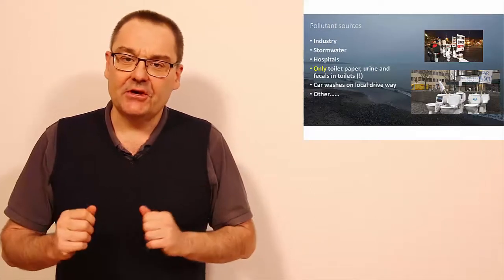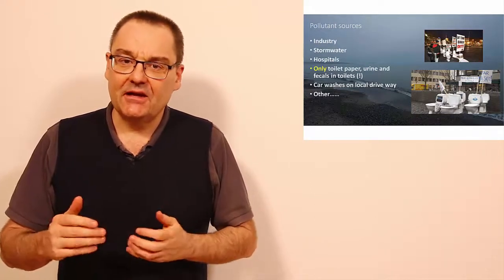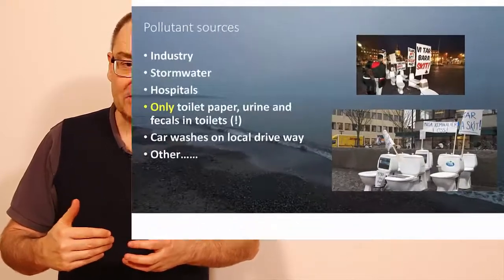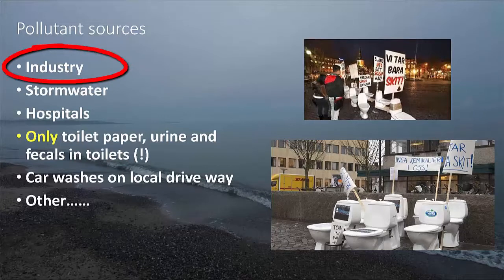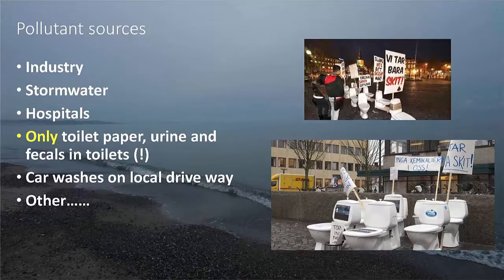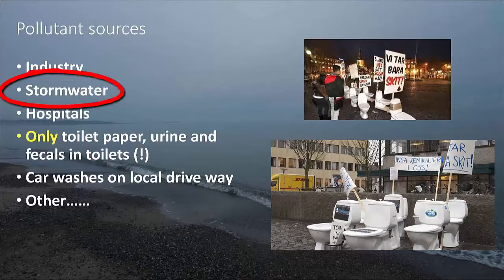Let's have a look at the polluting of domestic wastewater or sewage water. First of all, we have industry. If industry is connected to the piping network, in most cases it needs its own sewage treatment or process water treatment — that's very important to cut down on the pollutant load. We also talked about storm water, runoff water, and rainwater.